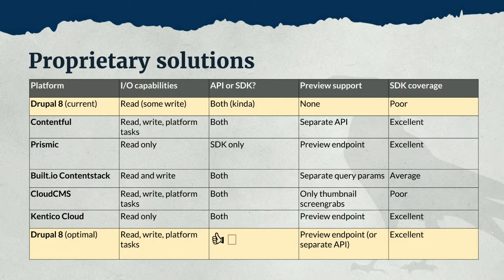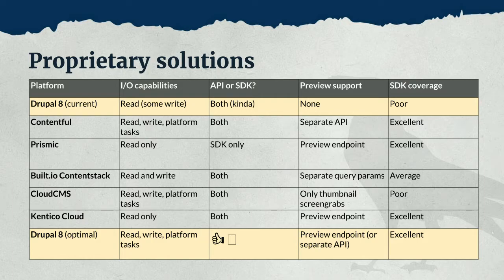Just to introduce these proprietary CMSs: Contentful is the headless CMS everyone's raving about. Prismic is really focused on the editorial experience — they really want to make marketers' jobs easier, and they've been doing some cool stuff like injecting edit buttons into their front ends. Built.io is a mobile backend as a service that's converted some of their work into a content-as-a-service solution. Cloud CMS is an interesting startup that focuses more on MongoDB-based approaches. And Kenneco Cloud is actually probably the most similar to Drupal — an ASP.NET CMS that has since transitioned into being a content-as-a-service platform.